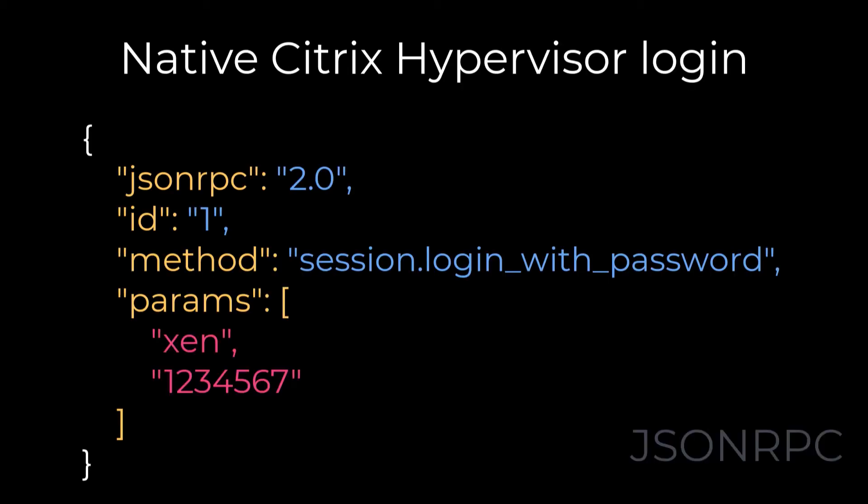Now let's go to the demo. Authentication to Citrix Hypervisor is simple. Provide parameters per JSON RPC standards, and as long as you authenticate with proper credentials, you are in. However, these standards are not based on the name-value pairs that microapps are comfortable with.